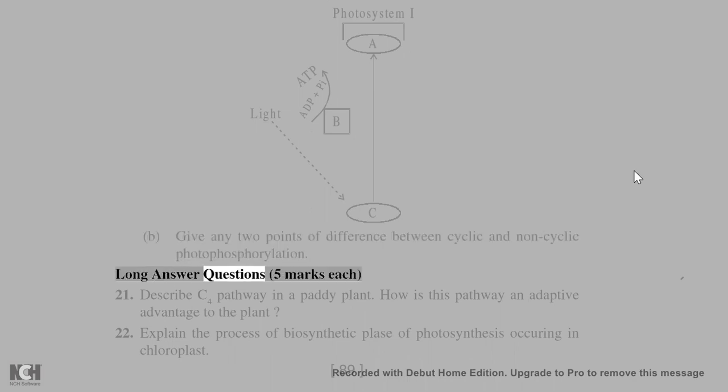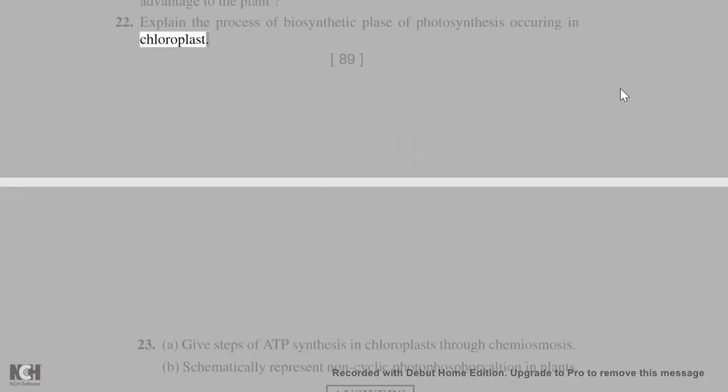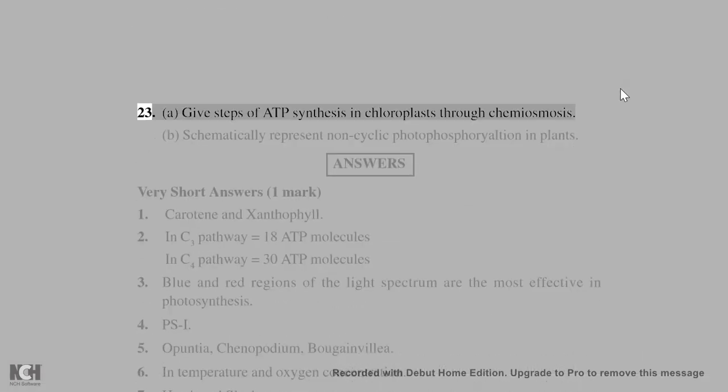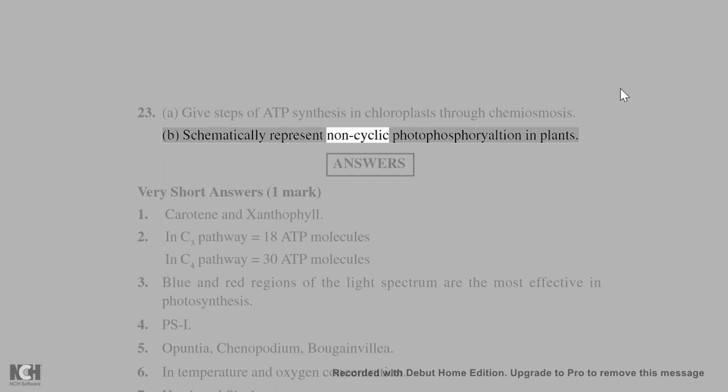Long answer questions (5 marks each): 21. Describe C4 pathway in a paddy plant. How is this pathway an adaptive advantage to the plant? 22. Explain the process of biosynthetic phase of photosynthesis occurring in chloroplast. 23. (a) Give steps of ATP synthesis in chloroplasts through chemiosmosis. (b) Schematically represent non-cyclic photophosphorylation in plants.